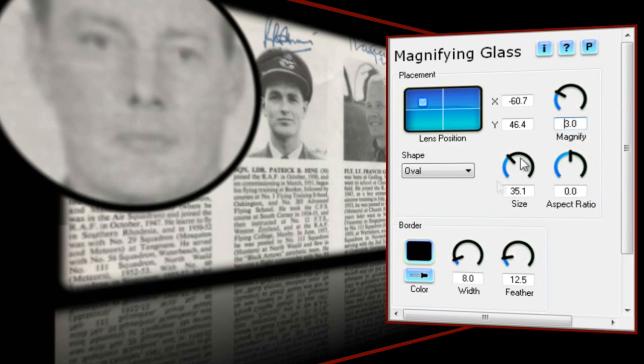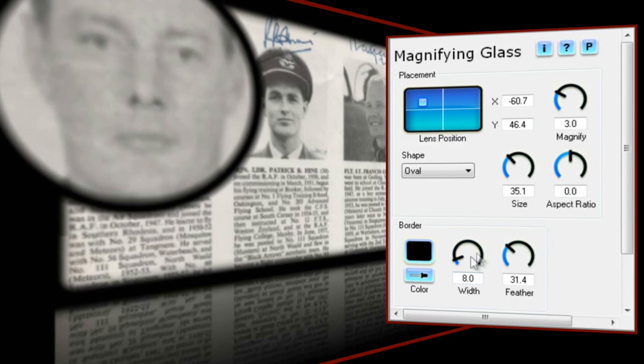The final set of controls I have at my disposal determine the properties of the border or rim of the magnifying glass. I can change its colour, its width, and I can feather the edge to soften it up. At the risk of being boring, I quite like the default values for this example as they complement the reflection settings quite nicely.